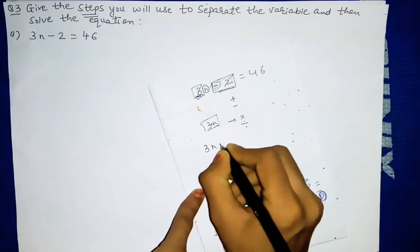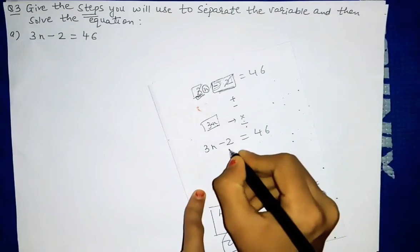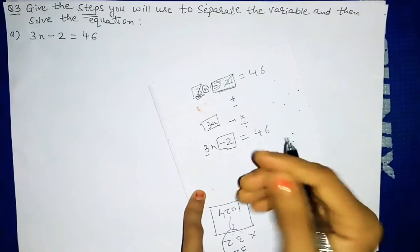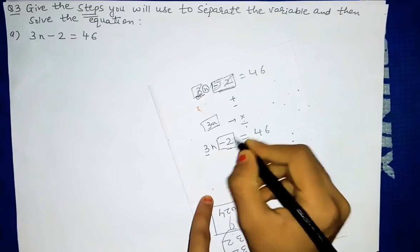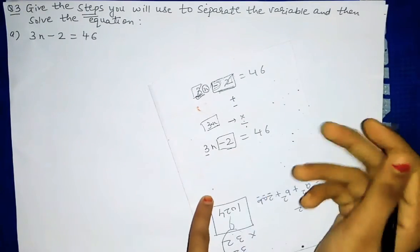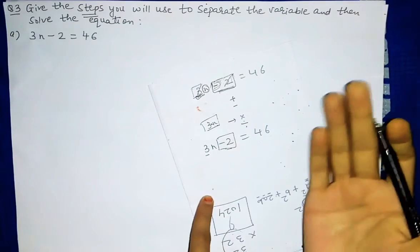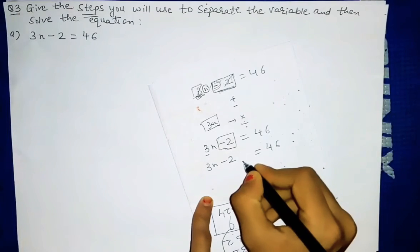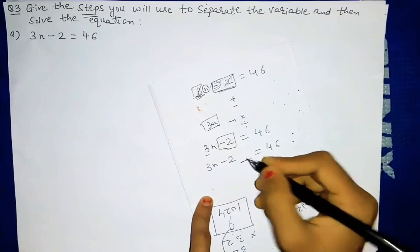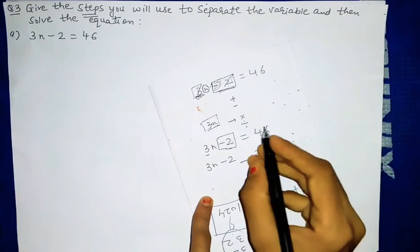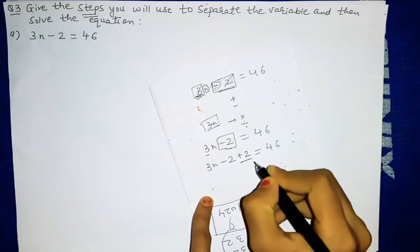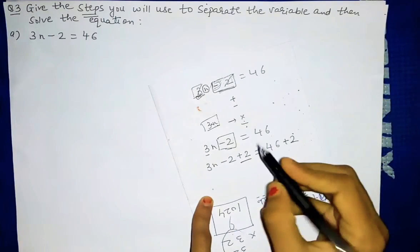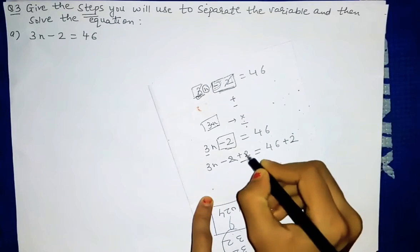In our first question, 3n minus 2 equal to 46, first we will remove minus 2 and then we will remove 3. For removing minus 2, the opposite of minus 2 is plus 2, so we will put plus 2 on both sides. Our equation is 3n minus 2 equal to 46. We will keep plus 2 so that minus 2 gets cancelled. Whatever step we do, we have to do it on both sides. So both sides we will do plus 2, and minus 2 and plus 2 will get cancelled.